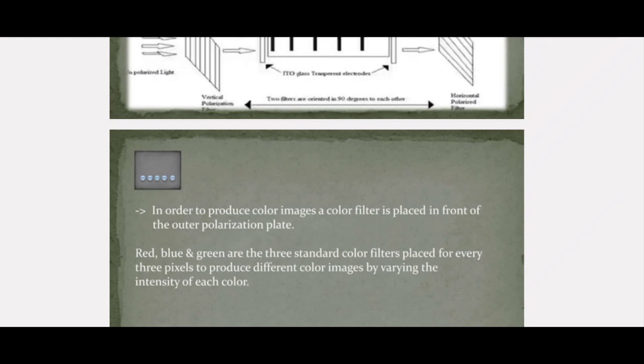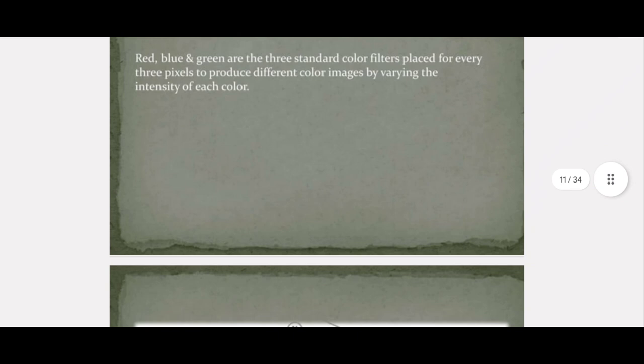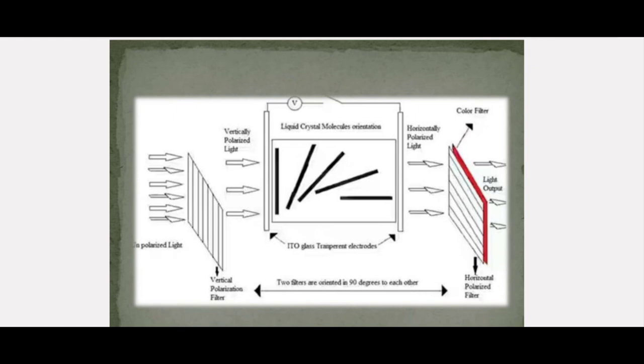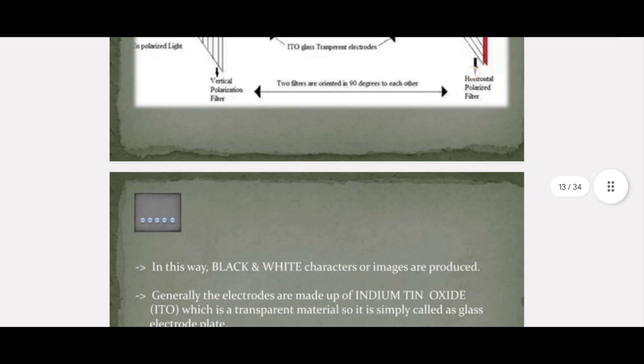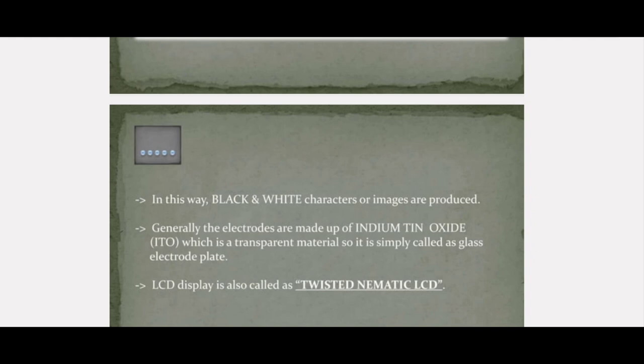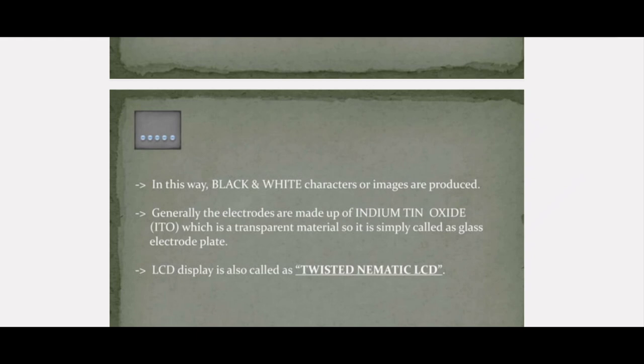The three main colors are red, blue, and green — these are the standard colors for LCD displays. By varying the intensities we can change the pixels. The color filter is placed and it is red, green, or blue. In this way, black-and-white or color images are produced. These glass electrodes are made up of indium tin oxide (ITO), which is a transparent material, also called a glass electrode plate. LCD displays are also called twisted nematic LCD because we are twisting the orientation of the liquid crystal layer.